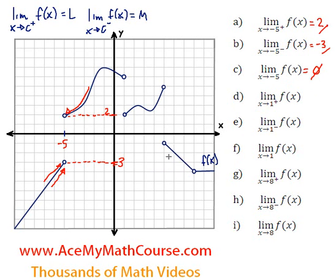Now let's find the limit of f as x approaches 1 from the right. So this is x equals 3, x equals 2, x equals 1. As we approach x equals 1 from the right, the limit will be just 2 — positive 2 for y. What if x is approaching 1 from the left? Then we're going this way: negative 1, 0, approaching 1 from the left. That's going to be 1, 2, 3, 4, 5, 6, which is just equal to 6.